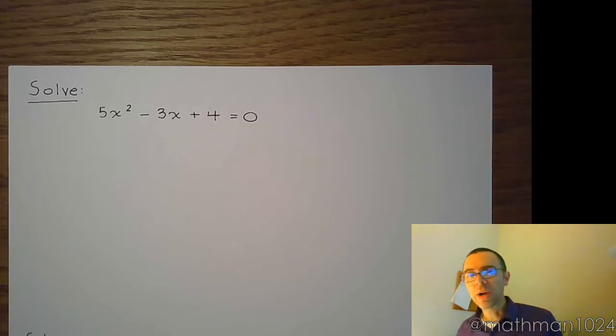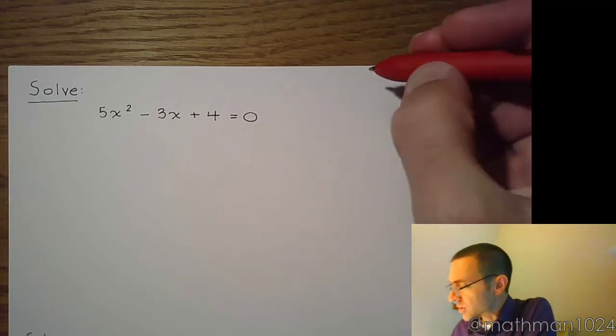All right, so let's take a look at a couple more algebraic equations for us to solve, starting with this quadratic equation, 5x squared minus 3x plus 4 equals 0.